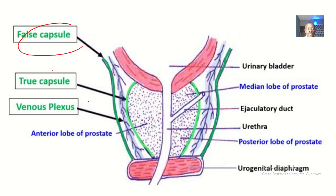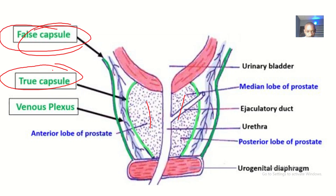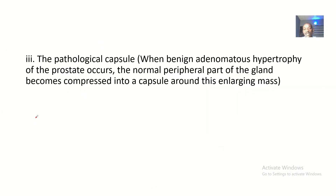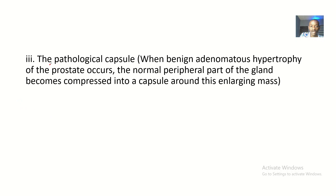You can see that this is the prostate gland inside, and the prostate gland has a true capsule. Outside the true capsule we have the false capsule. Between the true capsule and the false capsule is where we have the prostatic venous plexus. The pathological capsule is when there's benign adenomatous hypertrophy — or benign prostatic hypertrophy — where the prostate is increasing in size more than usual, and that extra layer is what we call the pathological capsule.